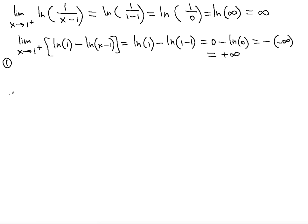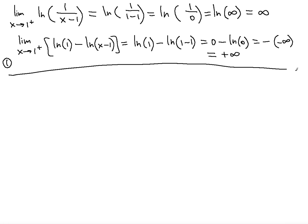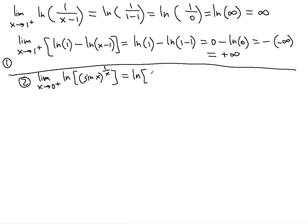The second example is to find the limit as x approaches 0 from the right of ln of sine(x) raised to the power of 1 over x. You can try inputting directly: sine(0) is 0, so you get ln of 0 to the power of 1 over 0, which is ln of 0 to the power of infinity.